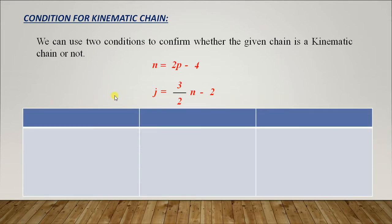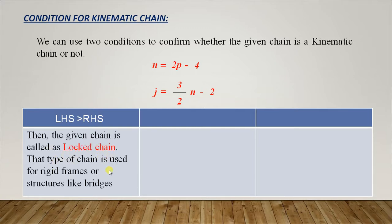In tabular form: the first condition is when the left-hand side value is greater than the right-hand side from either formula. For a given chain, if LHS is greater than RHS, that chain is called a locked chain. This type of chain is used for rigid frames or structures like bridges. There will be no relative motion between each and every part of the chain when this condition is satisfied.